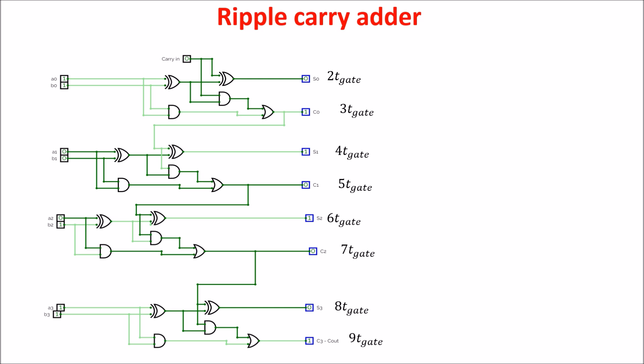So in a 4 bits ripple carry adder, we have this time here, so in general, for the last sum, we wait N times T gate, and for the last carry out, we wait N plus 1 times T gate.